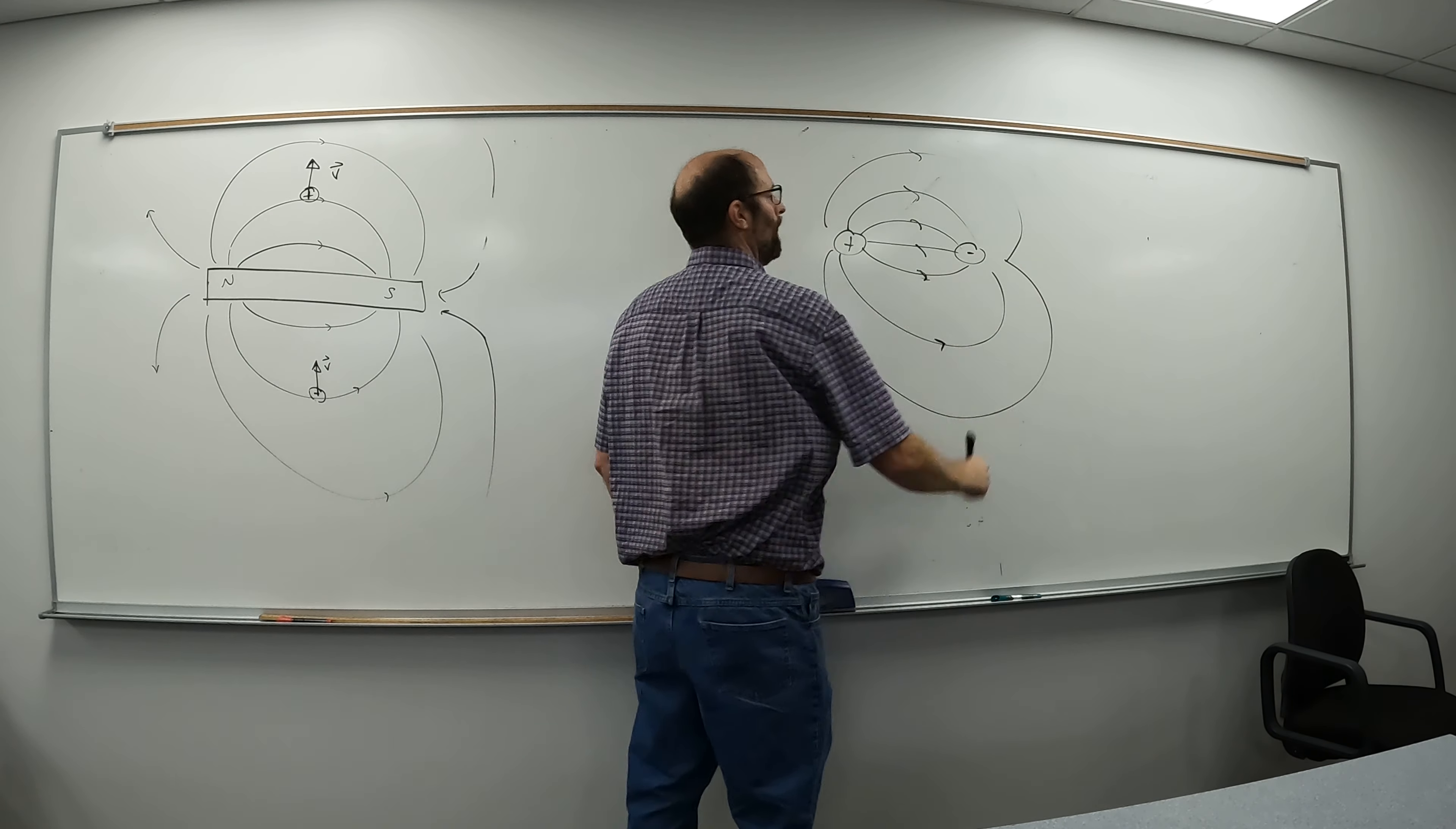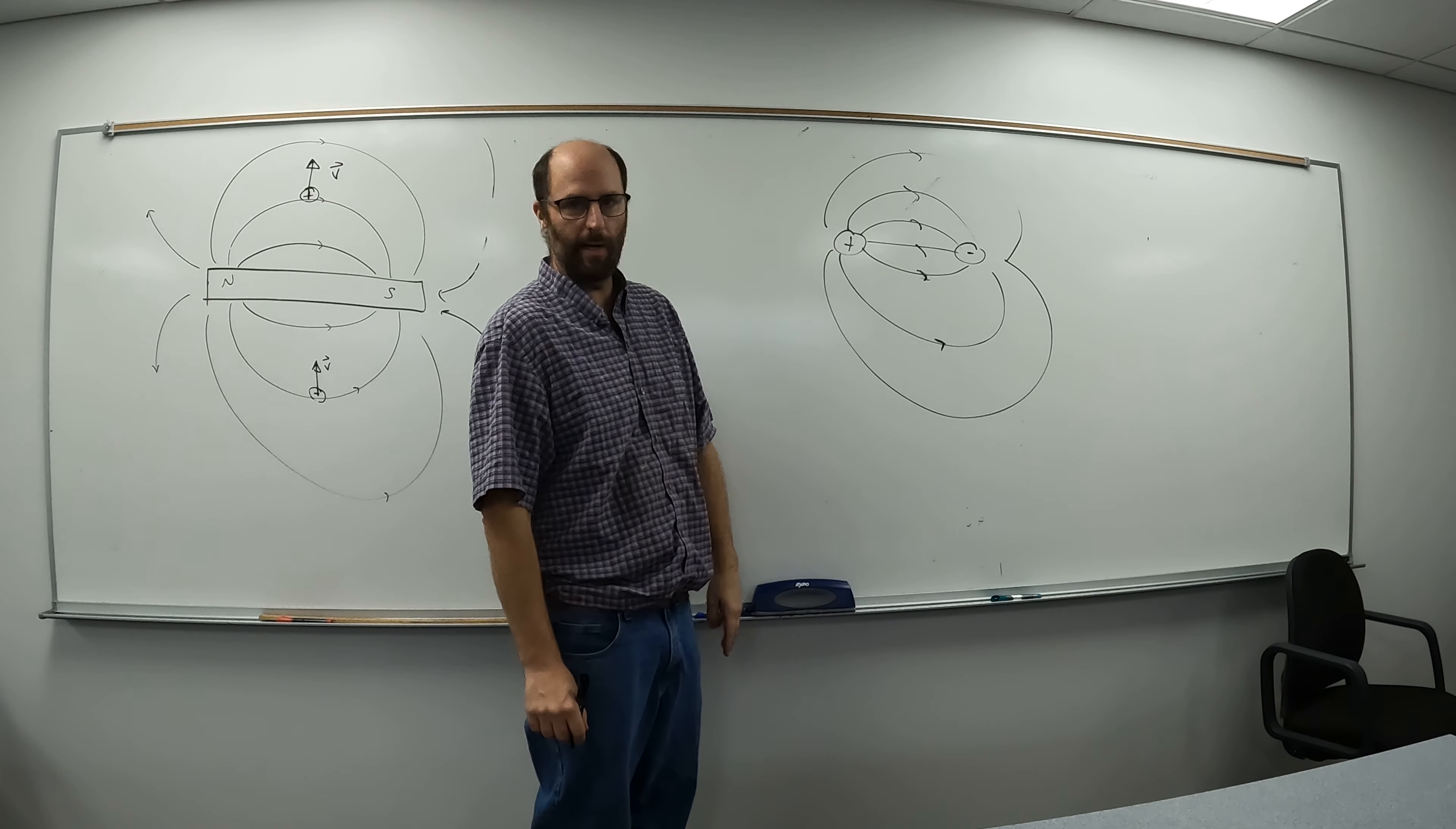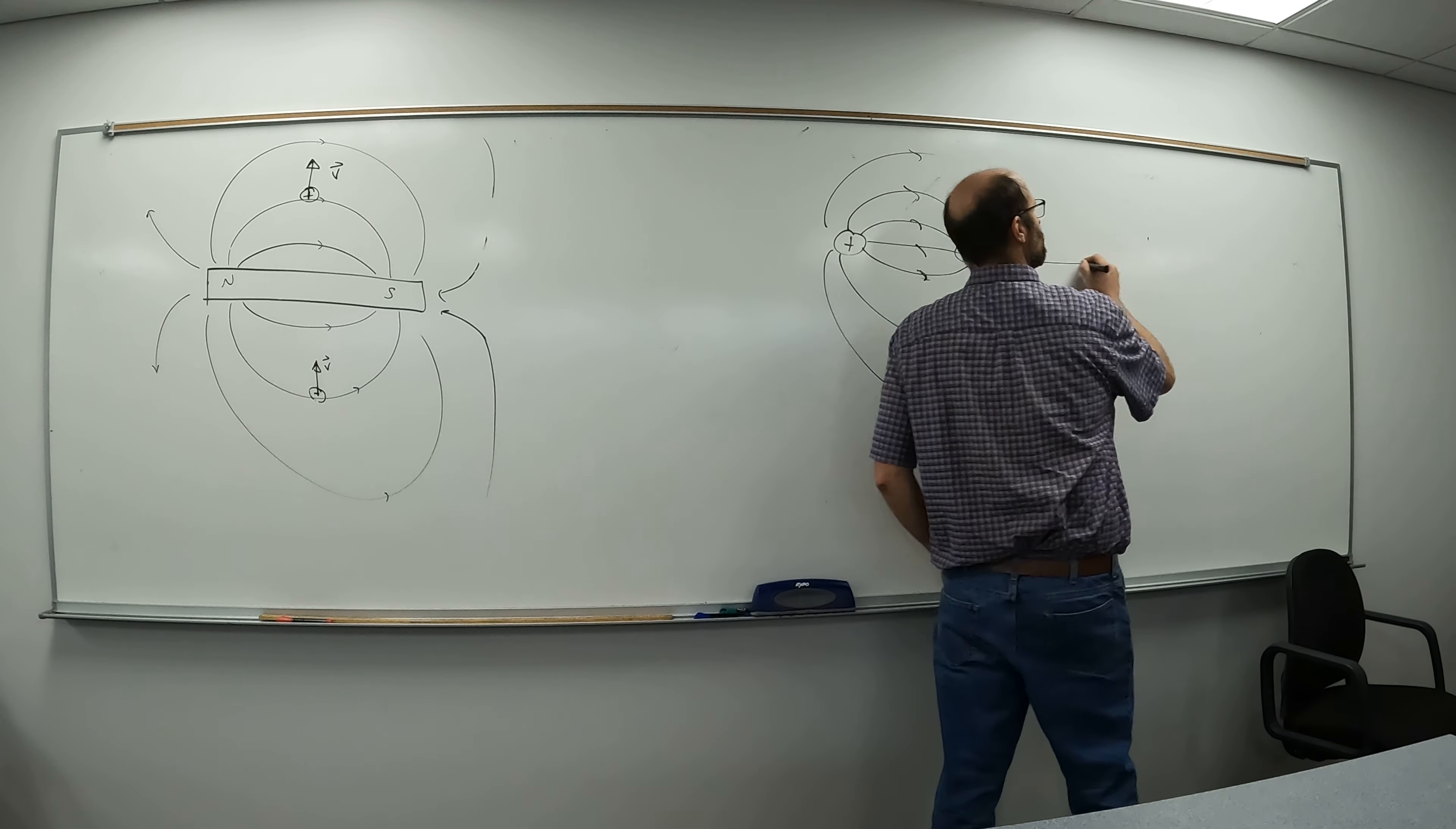The field is very strong between them. In general, it's running kind of left to right. An electric dipole has pretty much a virtually identical field shape as this one, which is why this is actually called a magnetic dipole field.